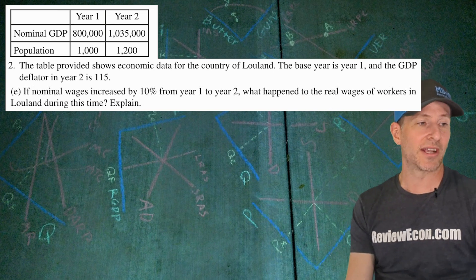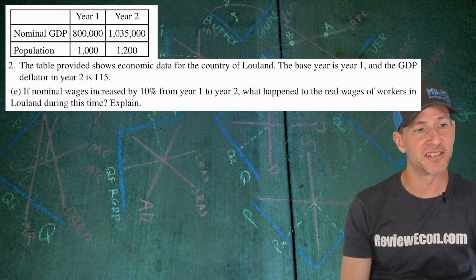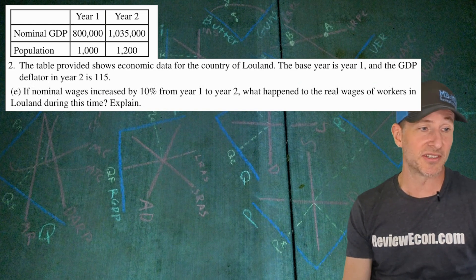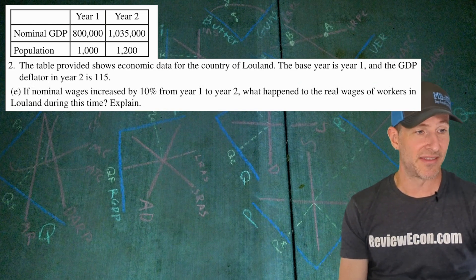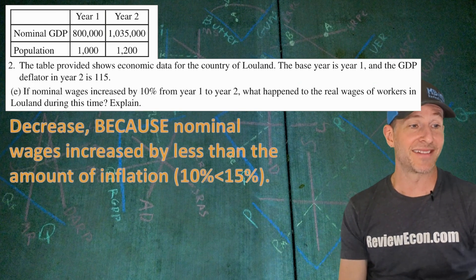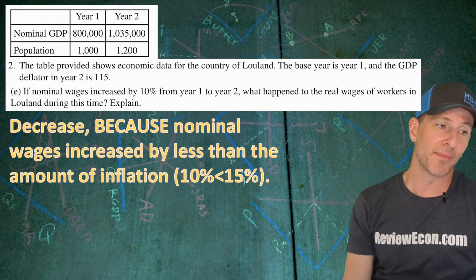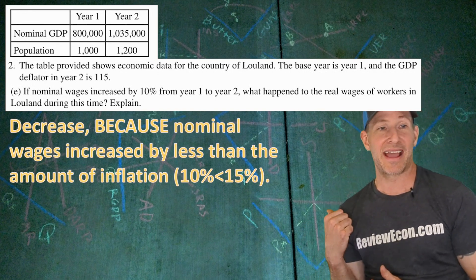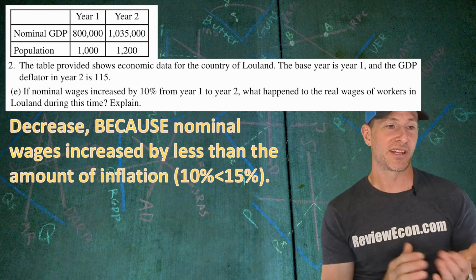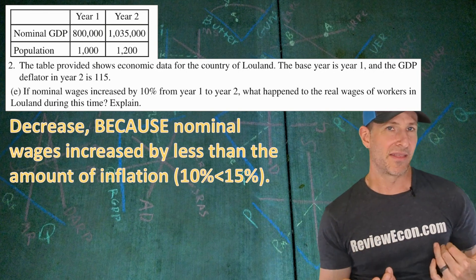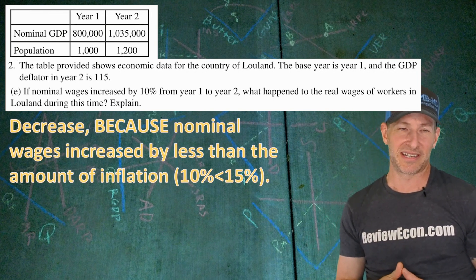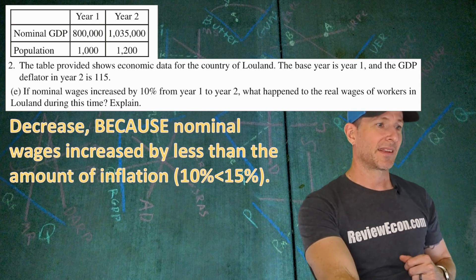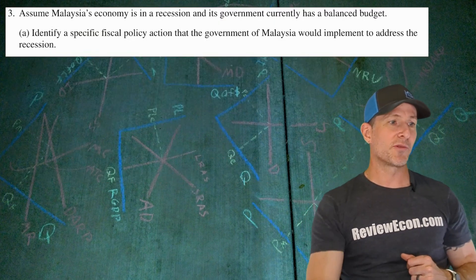For part E, if nominal wages increased by 10% from year one to year two, what happened to real wages of workers in Luland? The answer is they decreased, because the nominal wage increased by less than the amount of inflation. 10% is less than 15%, so real wages decreased by about 5%, based on the Fisher formula.